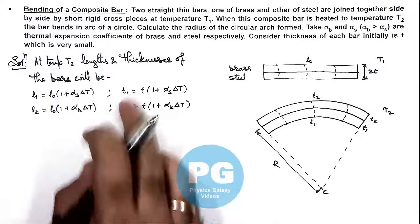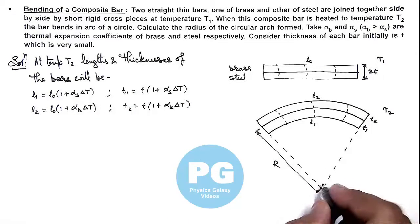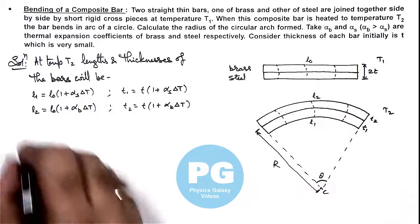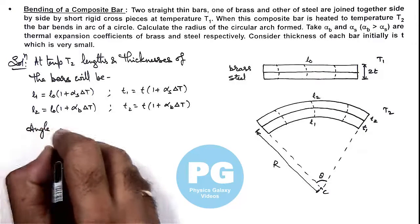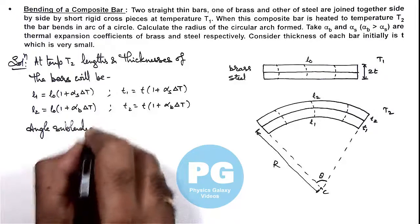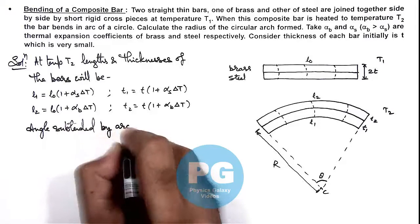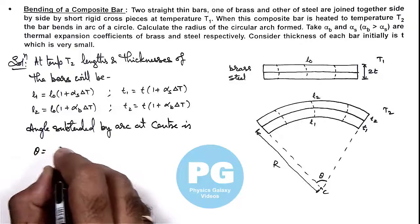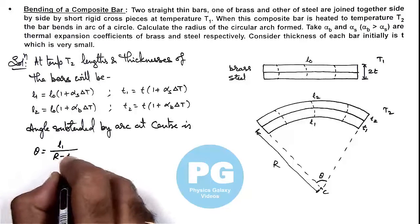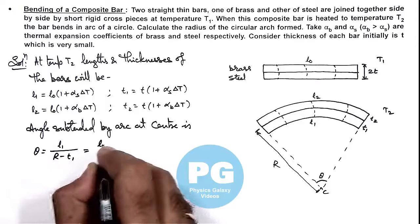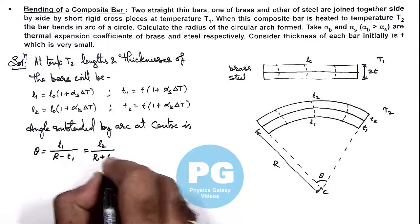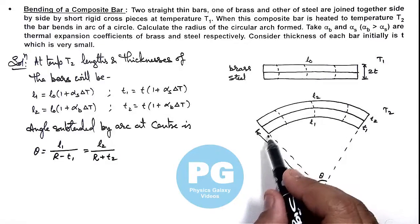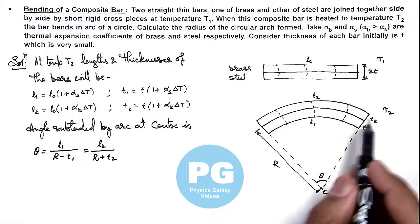As we have got the lengths and thicknesses, and if R is the radius of this arc and theta is the angle subtended by the bars at its center, we can write: angle subtended by arc at center is this angle theta, we can write as L1/(R - T1), and the same can be written as L2/(R + T2), because the radius of the inner section of this arc will be R - T1, and for the outer section it is R + T2.